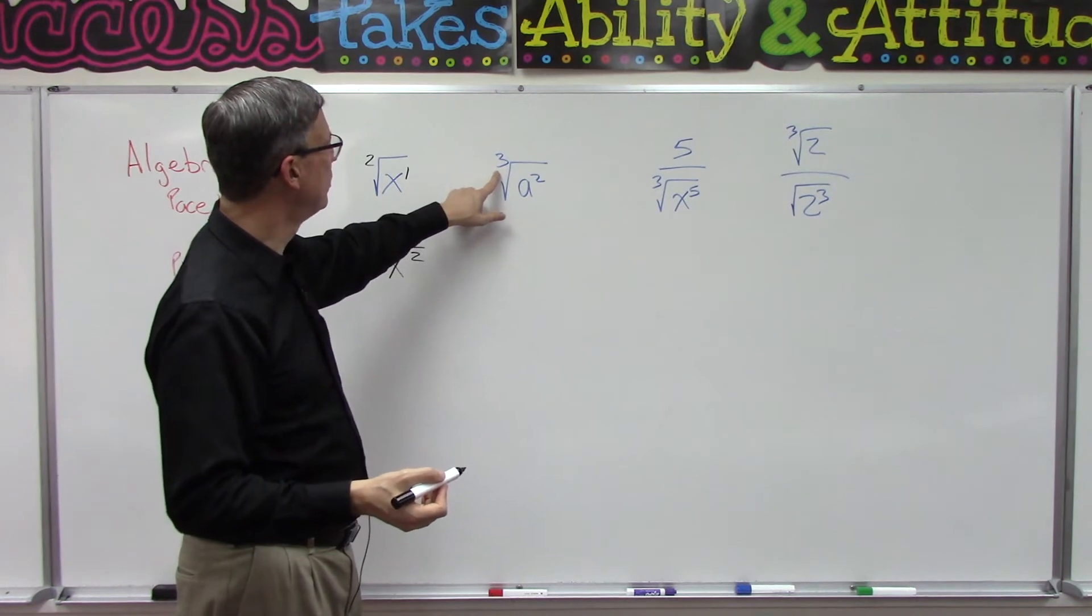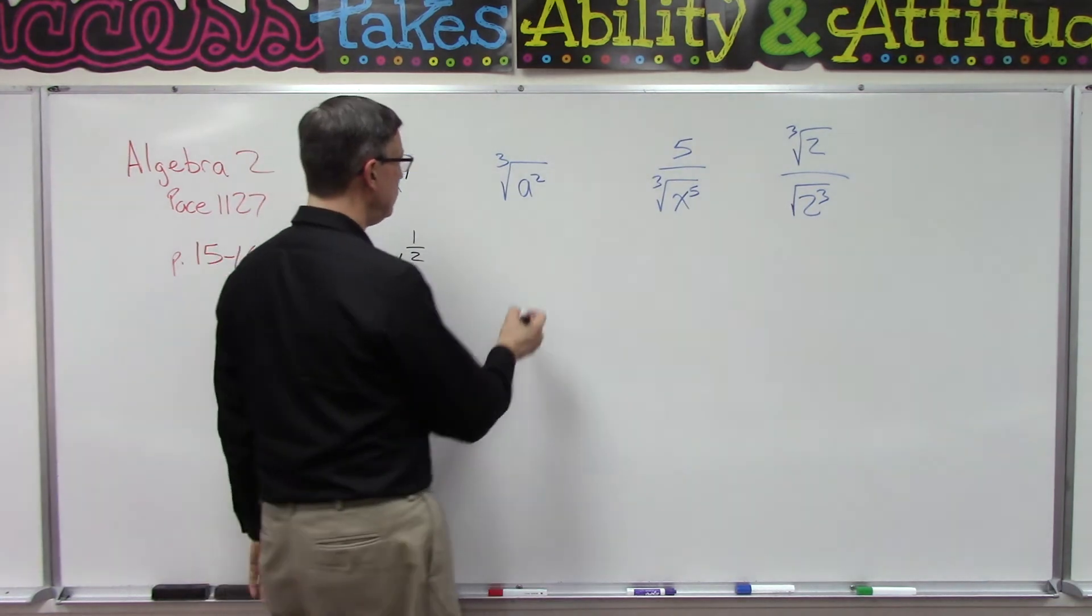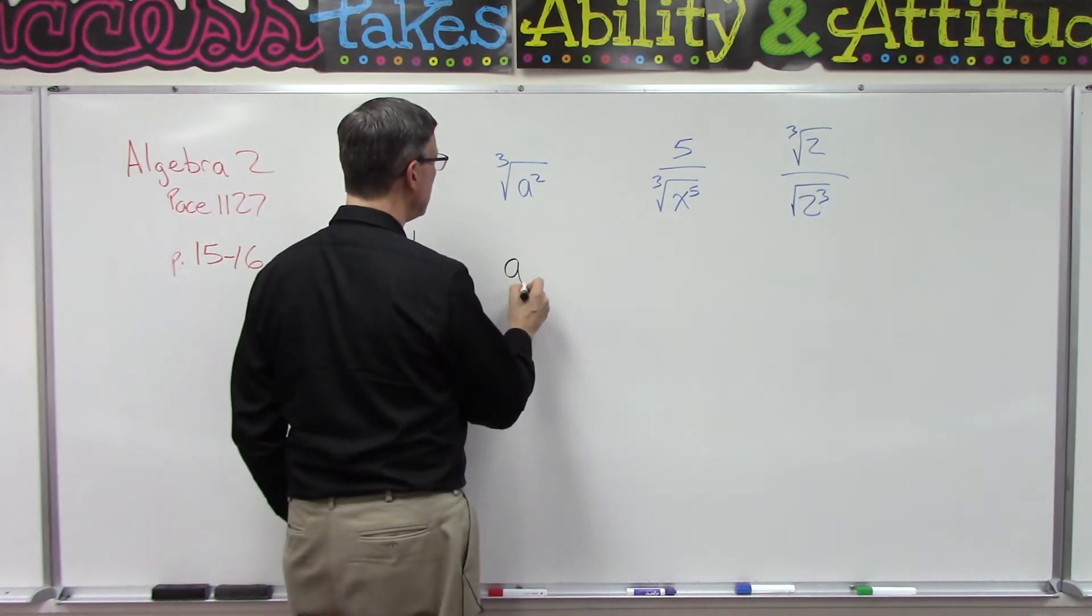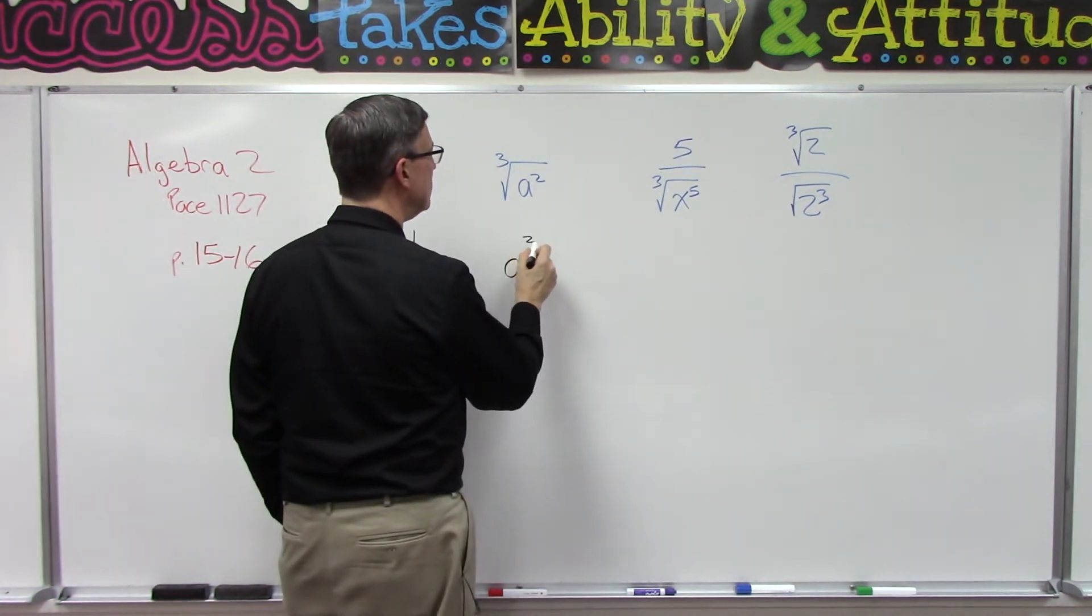The exponent, the power, is actually one half. It means the same thing as the square root of something. So this is the third root of, in this case, a squared. Let's see if you can do this with me.